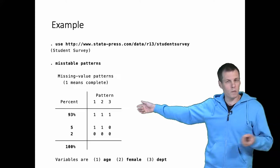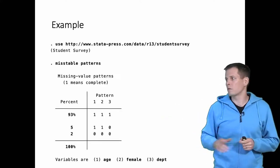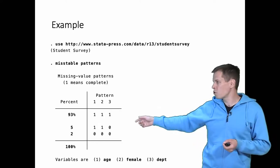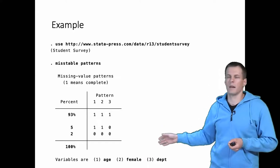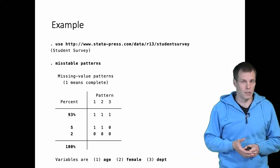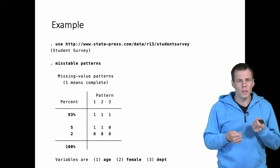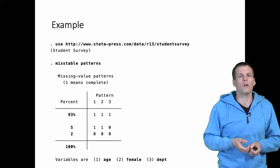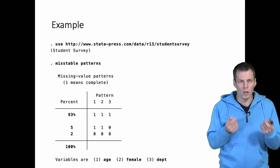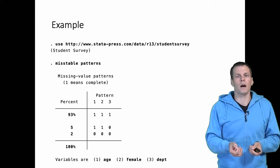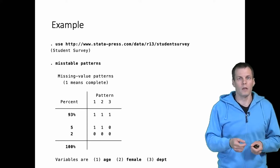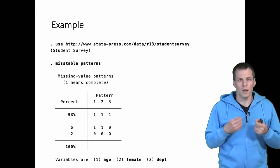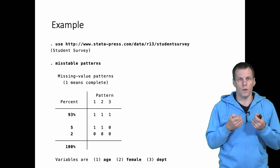Ninety-three percent of the cases have all these variables. Then five percent are missing age and female, and two percent are missing age, female, and department. There are other variables that don't contain any missingness. So when you start working with missing data, the first thing that you do normally is to print out the patterns to understand where things are missing, how much is missing, and are there some things that are missing together. Based on that analysis you then start thinking about your analysis strategy for dealing with the missing data.